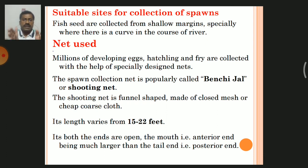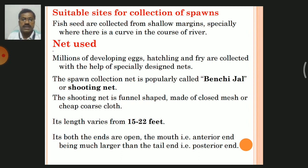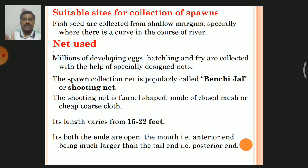Millions of developing eggs, hatchlings, and fry are collected with the help of specially designed nets. The spawn collection net is popularly called Benchijal or shooting net, and it is specifically used for the collection of fish seed. The shooting net is funnel-shaped, made of close mesh or fine coarse cloth.